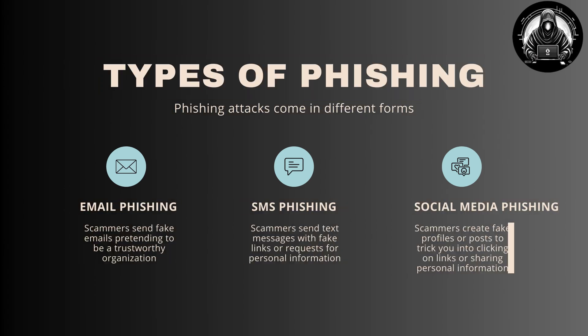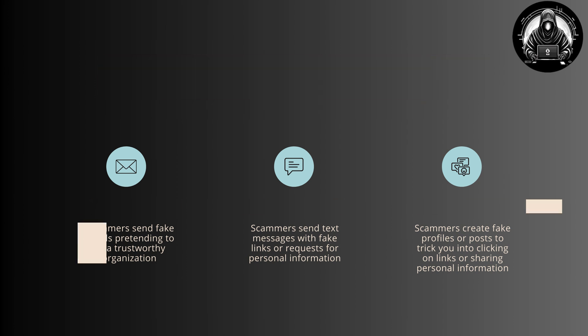Types of phishing. Phishing attacks come in different forms. Email phishing: scammers send fake emails pretending to be a trustworthy organization. SMS phishing: scammers send text messages with fake links or requests for personal information. Social media phishing: scammers create fake profiles or posts to trick you into clicking on links or sharing personal information.